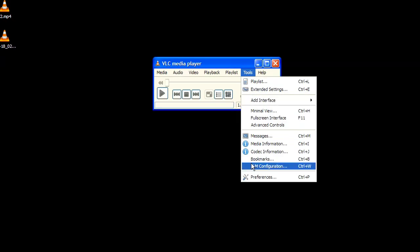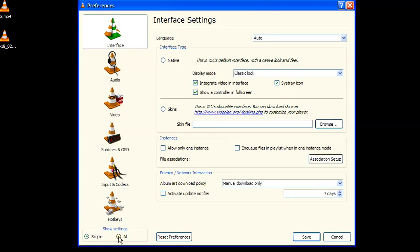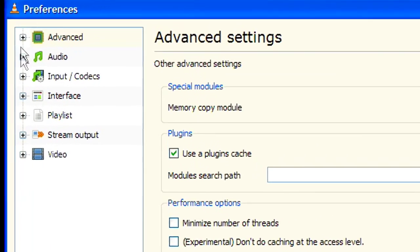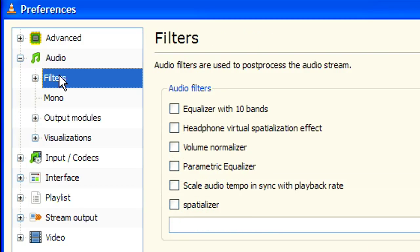Then go to Preferences, set to All Settings, Audio, Filters, and here Scale Audio Tempo and Sync. I also like Headphone Virtual Spatialization Effect. I like that for my headset.